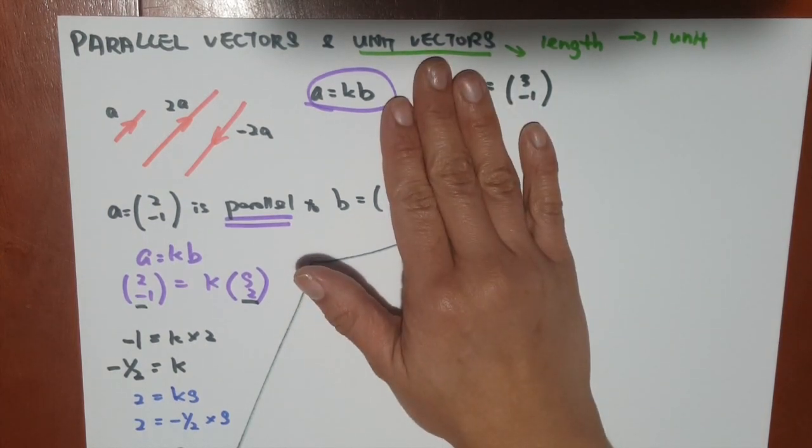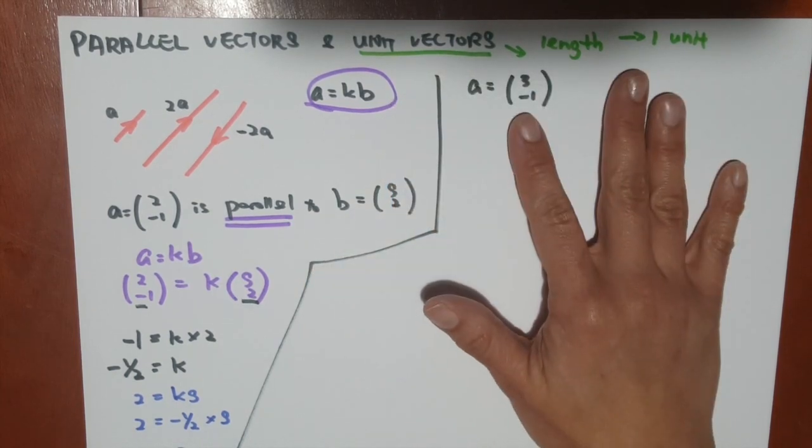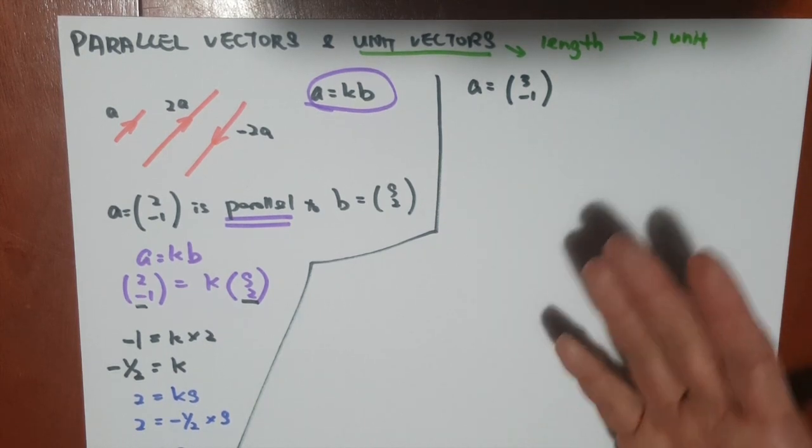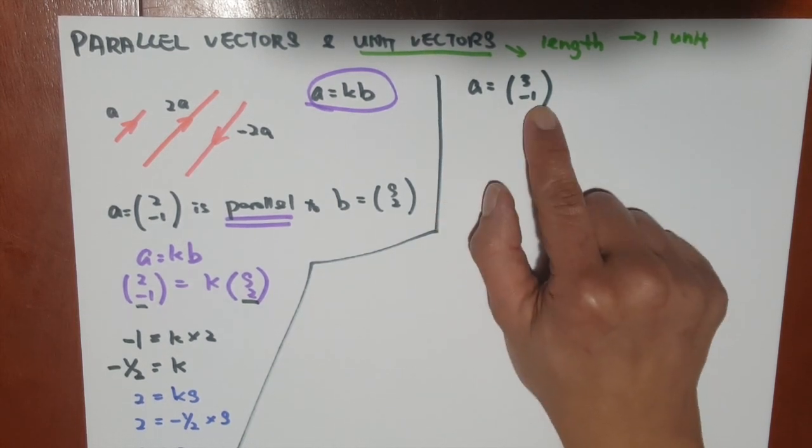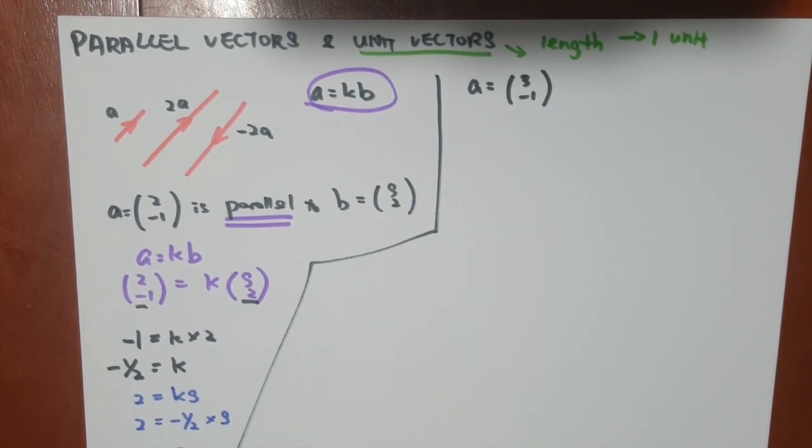So in the next part, we are focusing on unit vector. And unit vector means that it is still a vector, but the length needs to be 1 unit. So for example, if I have a question like, find the unit vector in the direction of a, and a has a vector like this.